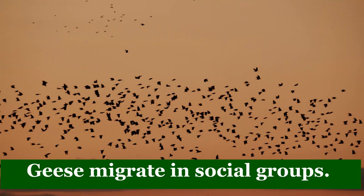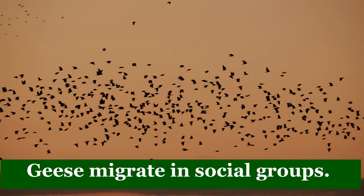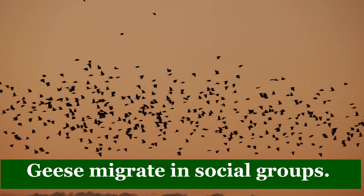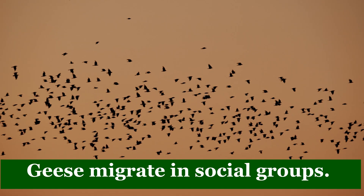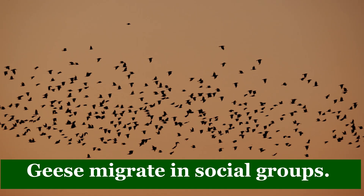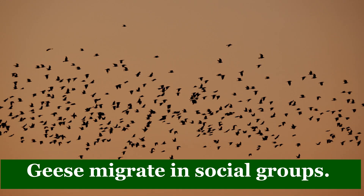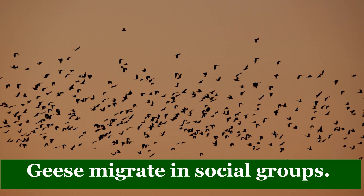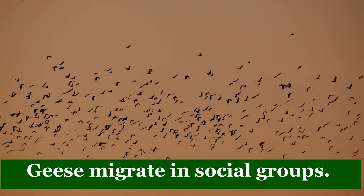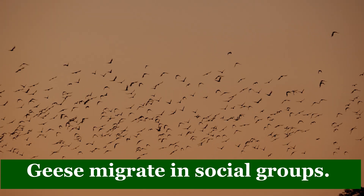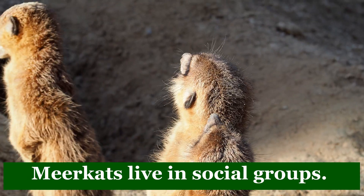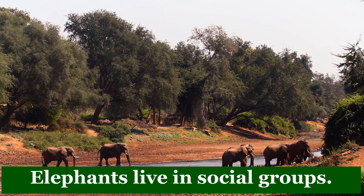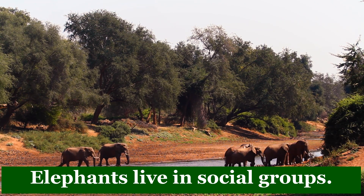Animals that live in groups are considered social or gregarious species. Their grouping behavior can be temporary or permanent. For example, some bird species migrate in flocks only during certain seasons. Other animals, such as meerkats or elephants, live in family groups throughout their lives.